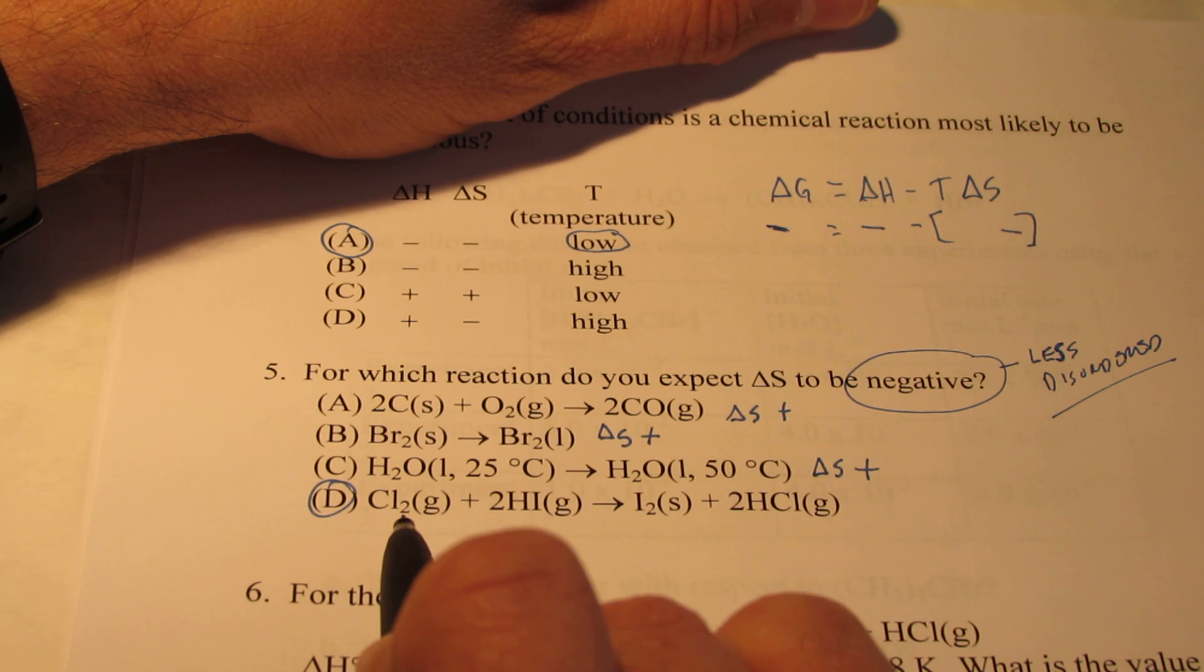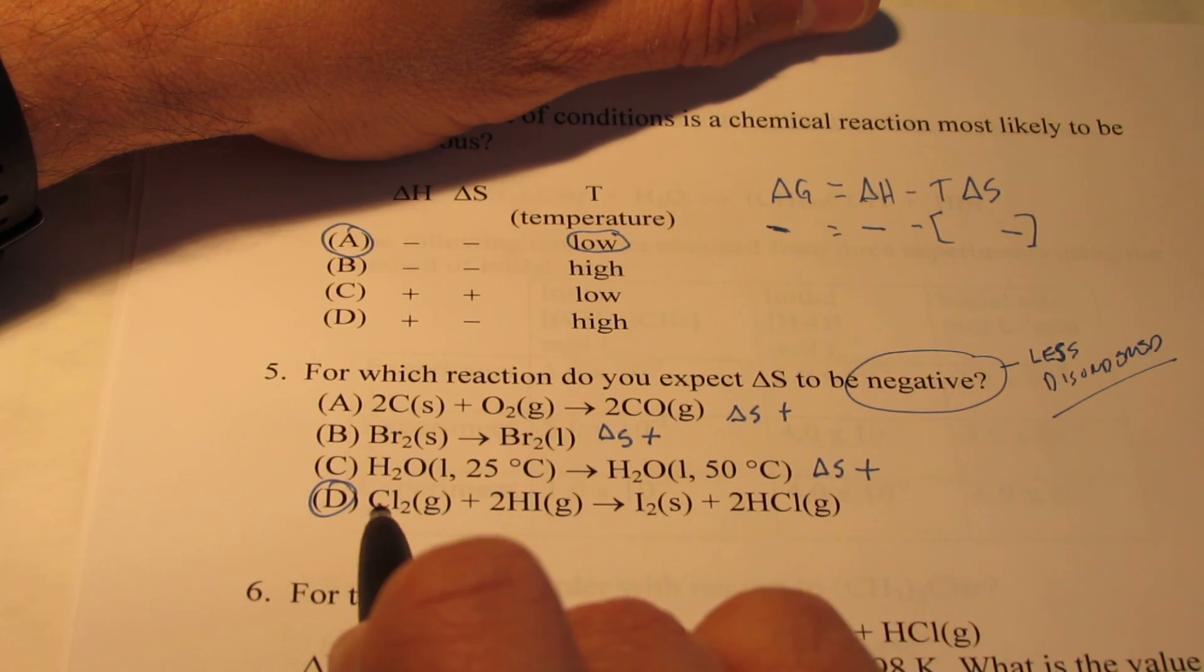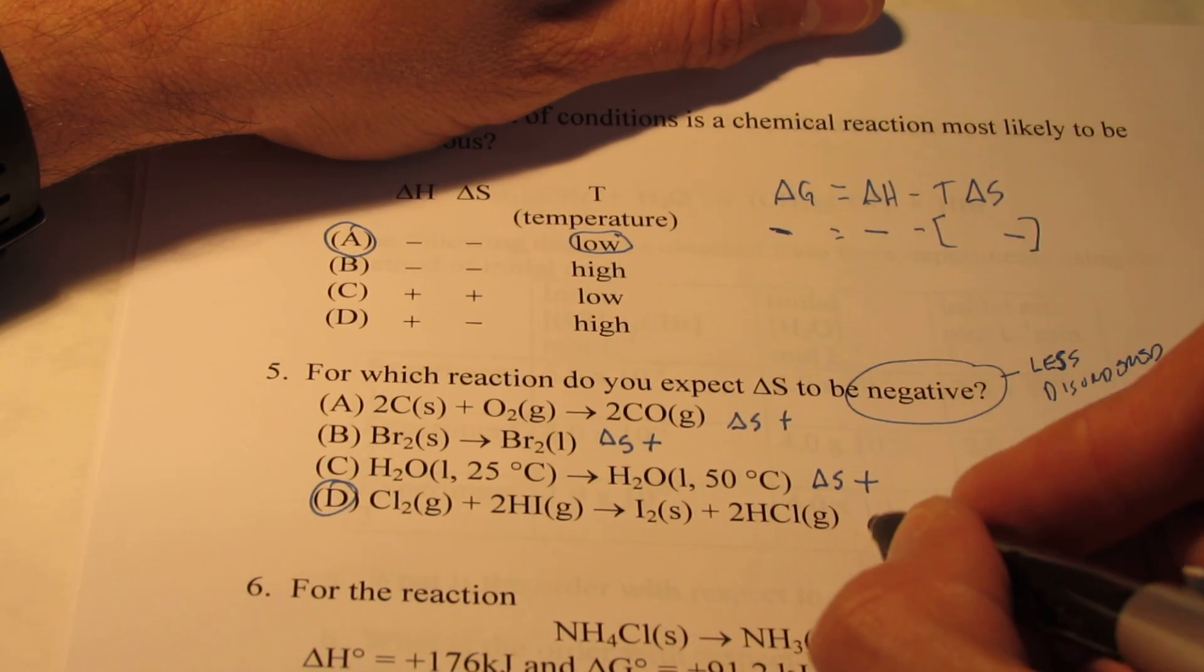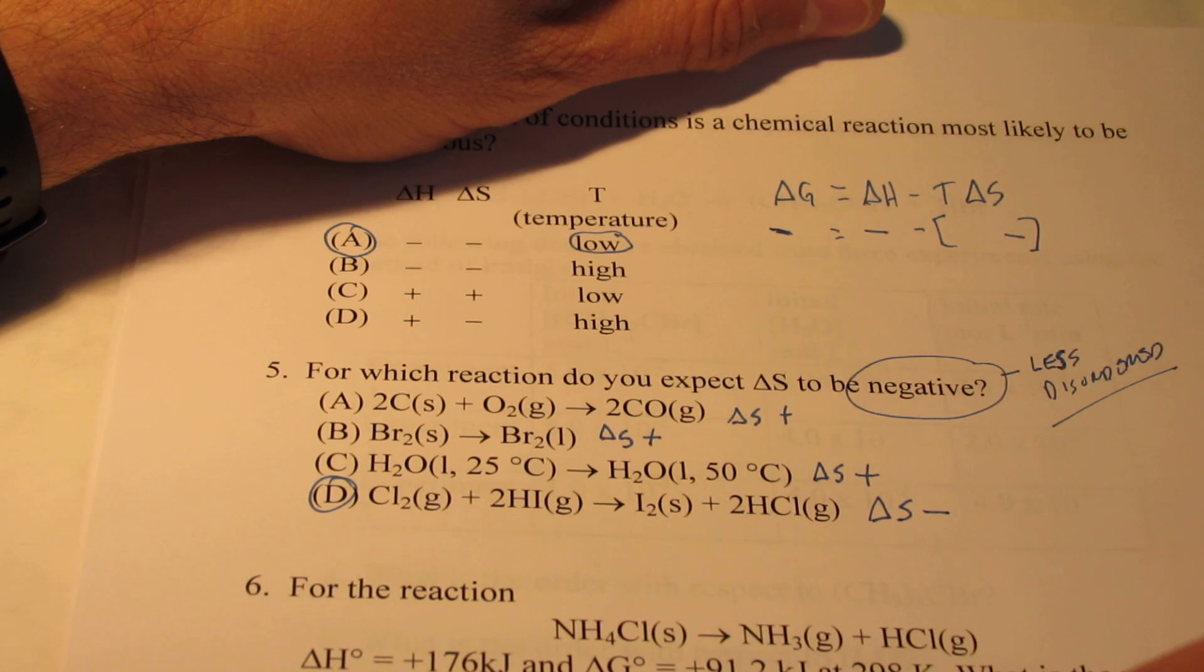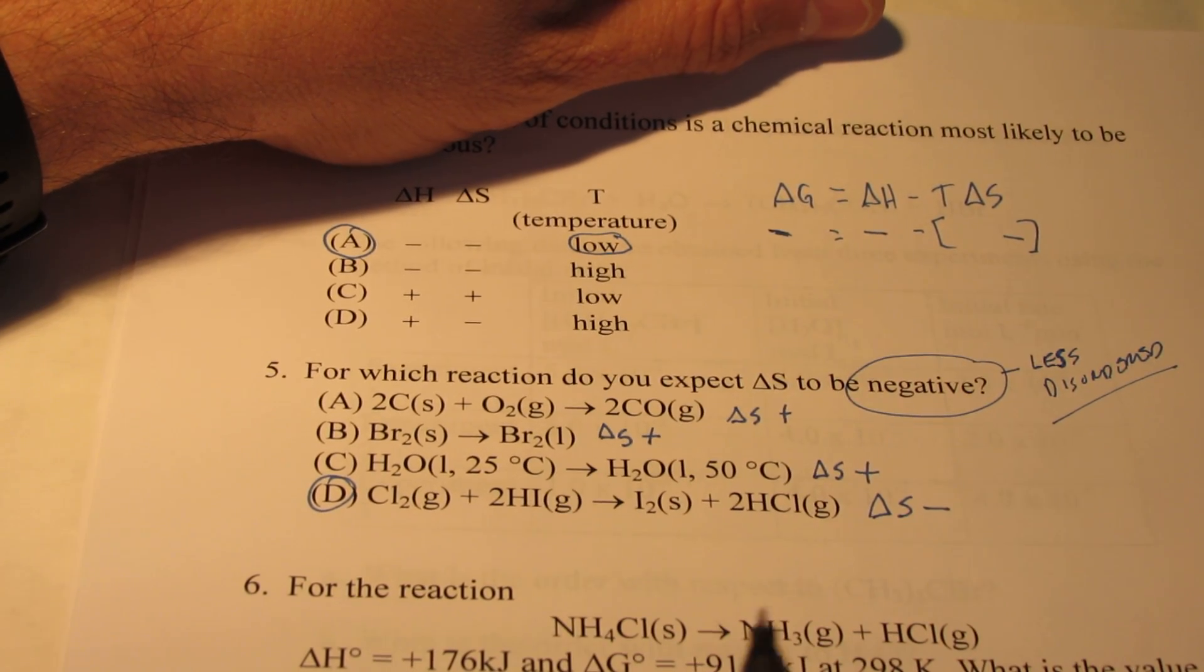Don't we start with a total of three gases, Cl2 gas and two HI gases? So we start with three gases. We end up with a solid and only two gases. So here, entropy change is negative. It's less disordered. It means it's becoming more ordered.